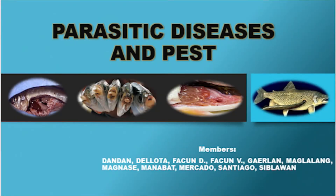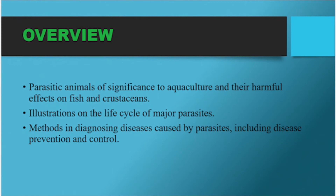Good day! In this presentation, we're going to discuss parasitic diseases and pests. Our members: Dandan, Deliota, Facundi, Gaerlan, Maglalang, Magnase, Manabat, Santiago, and Siblawan. We're going to discuss parasitic animals of significance to aquaculture and their harmful effects on fish and crustaceans, illustrations on the life cycle of major parasites, methods in diagnosing diseases caused by parasites, including disease prevention and control.